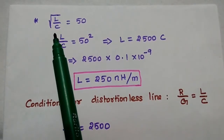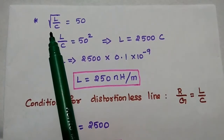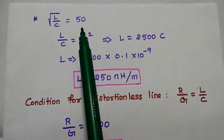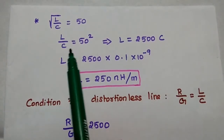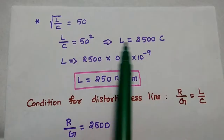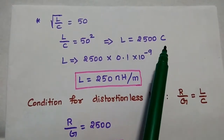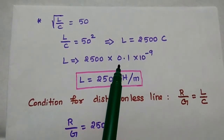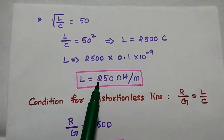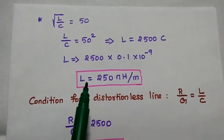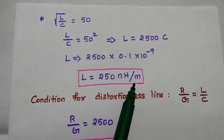First, we are going to find out the value of inductance using the characteristic impedance. Square root of L by C is equal to 50. Squaring both sides, L by C equals 2,500. Moving C to the right-hand side and substituting the capacitance value of 0.1 × 10⁻⁹ nanofarad, we get the inductance value equal to 250 nanohenry per meter.